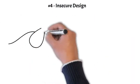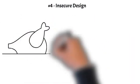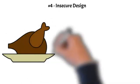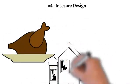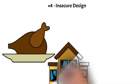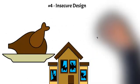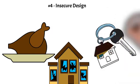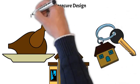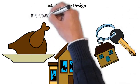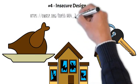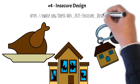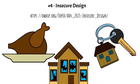Number 4: Insecure Design. A new category for 2021, with a focus on risks related to design flaws. If we genuinely want to move left as an industry, it calls for more use of threat modeling, secure design patterns and principles, and reference architectures.